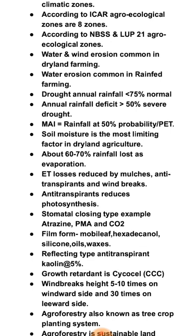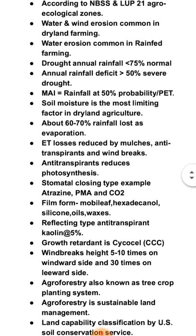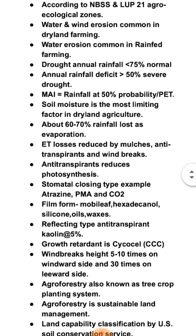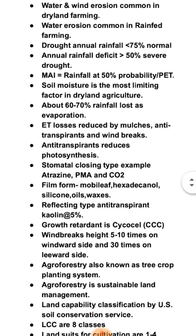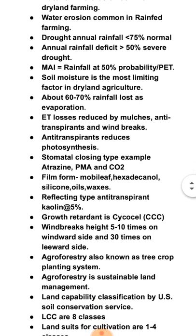Types of antitranspirants: stomatal closing type — example: PMA (phenyl mercuric acetate) and CO2. Film-forming type — examples: silicon oils, waxes. Reflecting type antitranspirants: Kaolin at 5%. Growth retardant type: Cyclocel. Windbreaks are planted on the windward side.